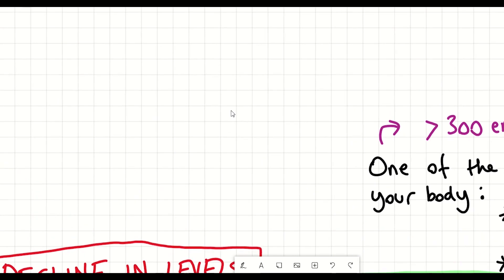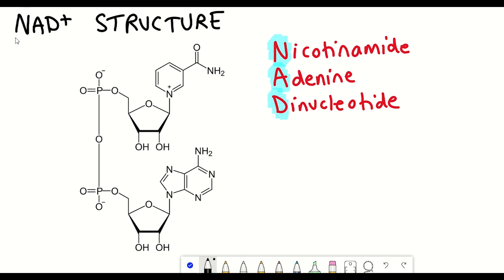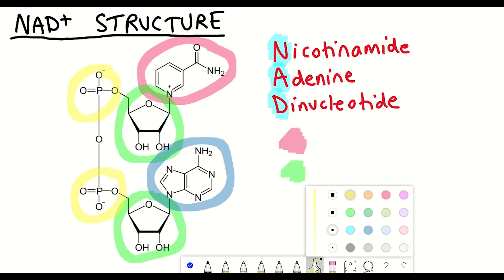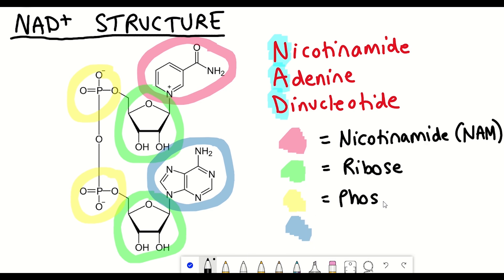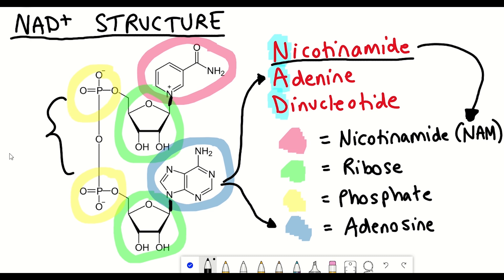The best way to understand it is to understand why NAD+ is called nicotinamide adenine dinucleotide, which can be seen by looking at its structure. The first part, nicotinamide, comes from the fact that it has a nicotinamide group attached to a ribose molecule. The second ribose in NAD+ is attached to an adenosine group — hence the nicotinamide adenine aspects of the name. The term dinucleotide refers to the fact that these two ribose molecules are attached through two phosphates, similar to the backbone of nucleic acids.